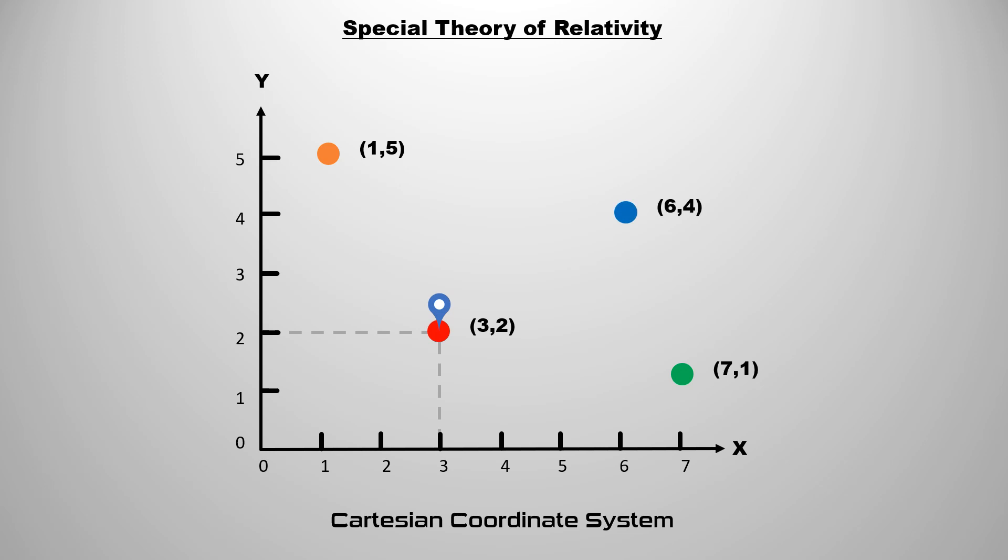How the object is moving with time, it cannot be known with this coordinate system. In such a situation, a method is needed that can tell the position of the object at different times in the space. For this, we replace the y-axis of the normal two-dimensional Cartesian coordinate system with the axis of time.